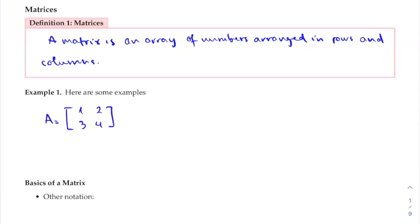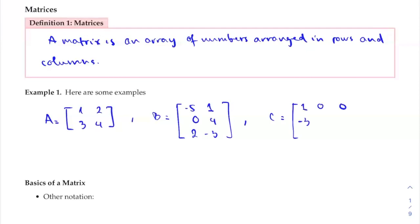We have another matrix: matrix B is of the form negative 5, 1, 0, 4, 2, negative 3. And matrix C is of the form 1, 0, 0, negative 3, 1, 0, 5, negative 2, and 1. For matrix B, you have three rows and two columns. For matrix C, you have three rows and three columns. Those numbers identify the dimensions of the matrix.